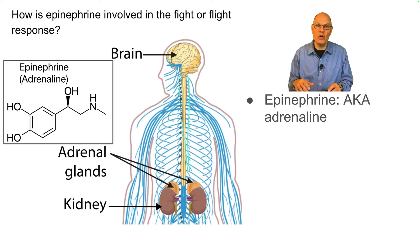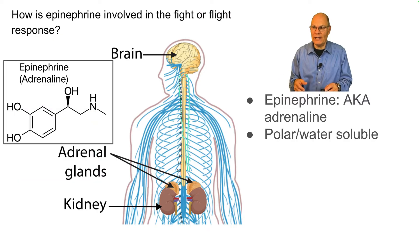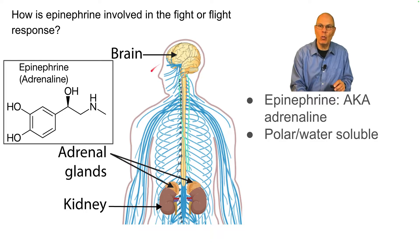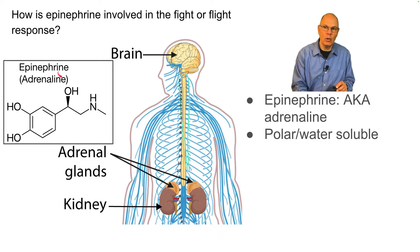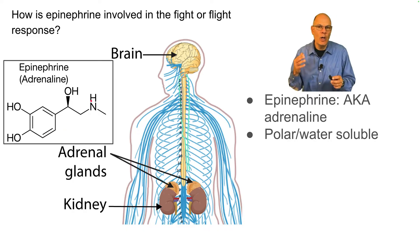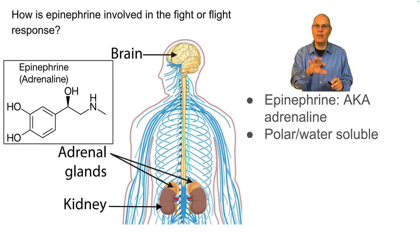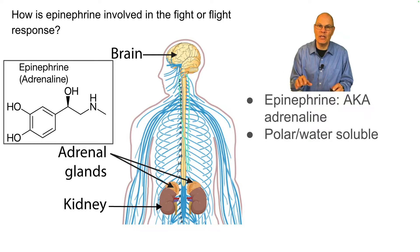Epinephrine is also known as adrenaline. It's a polar, water-soluble hormone. You can see these hydroxyl groups over here and over here. Here's an amino group. This is not going to be able to diffuse into the cytoplasm — it's going to bind at the membrane.